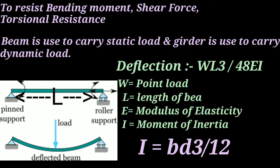Here W is the point load, L is the length of the beam, E is the modulus of elasticity, and I is the moment of inertia. For a rectangular section, moment of inertia I equals BD³/12. From this formula, if we increase the width two times, deflection reduces to half. But if we increase the depth by two times, deflection reduces to one-eighth. That is why depth is more important than width in a beam.